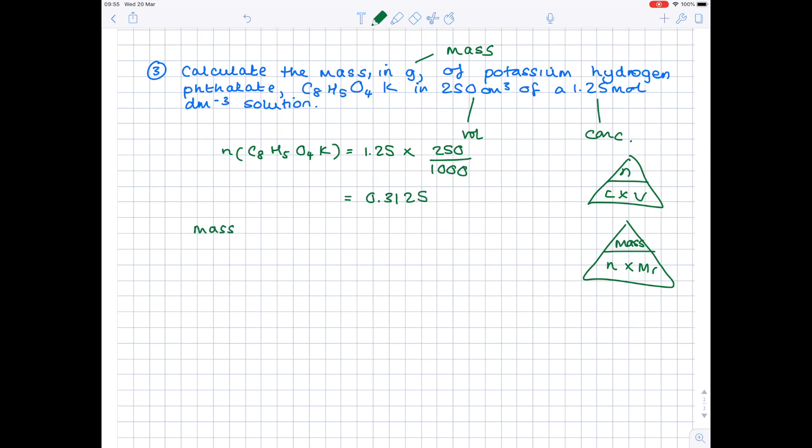Now to calculate the mass of this substance, we obviously need to do number of moles times Mr. So we have our number of moles, which is 0.3125, times the Mr. So we need to do 8 lots of carbon, added to 5 lots of hydrogen, added to 4 lots of oxygen, and then added to potassium. And when you've sorted all of that out, you get an Mr, which is 204.08. Don't worry if your number is slightly different. Periodic tables do vary. And when you've done that final calculation, your mass will come out as being 63.8 grams to three significant figures.